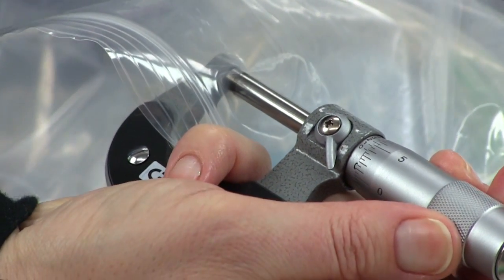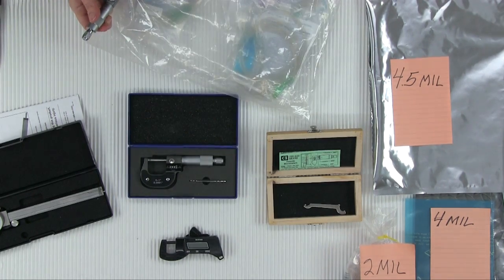You can also measure bags that have already been filled with product by measuring the top half of the bag beyond the closure.